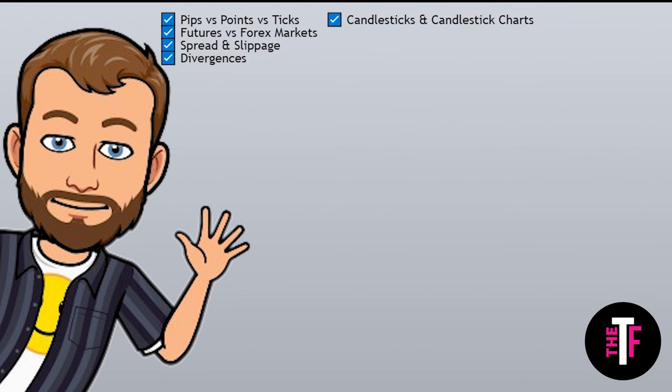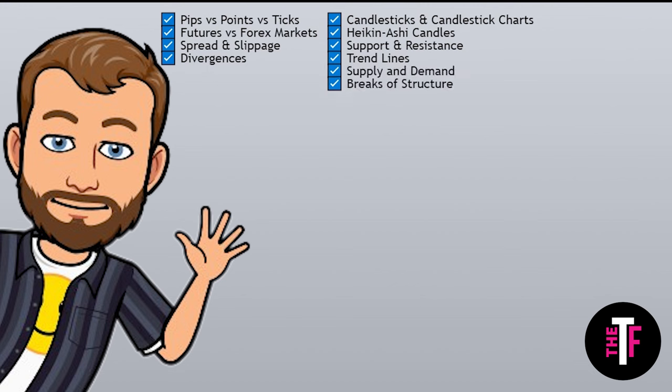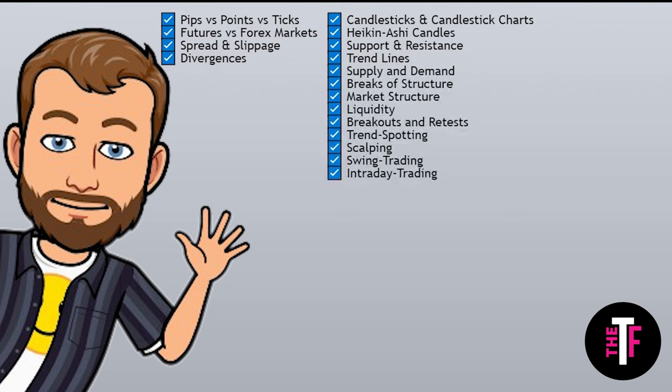We'll cover reading candlesticks, candlestick charts, and Heiken Ashi charts, understanding technical analysis basics like support and resistance, trend lines, supply and demand, and breaks of structure. We'll touch on price action concepts like market structure, liquidity, breakouts and retests, and spotting the trend. We'll also go into the different types of day trading like scalping, swing trading, and intraday trading.